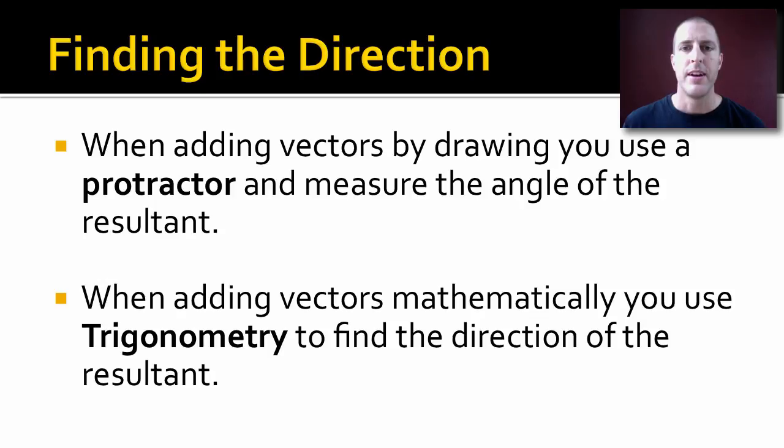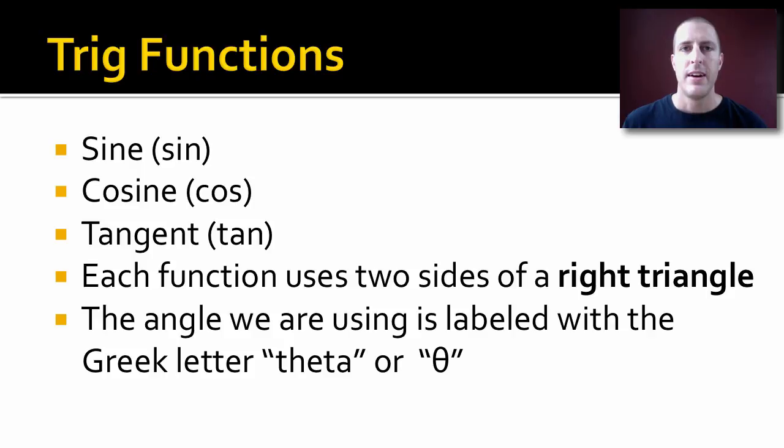To find the direction when you're drawing, you use a protractor and measure the direction of the resultant. But when you're adding them mathematically, we're going to use trigonometry to find the direction of the resultant. Let's review some trig functions. We have sine, cosine, and tangent, our three trig functions. Each function uses two sides of a right triangle. It must be a right triangle, otherwise it won't work. When we're labeling our angles, we label them with the Greek letter theta, kind of like a circle with a line through it.